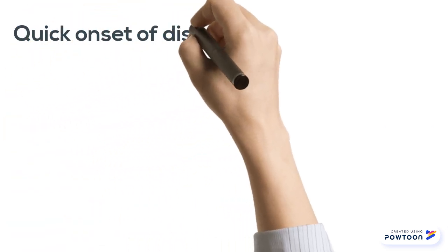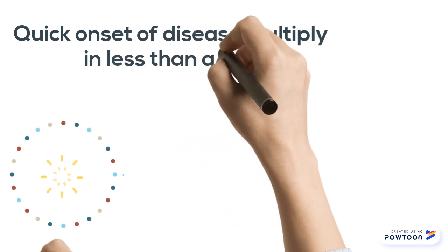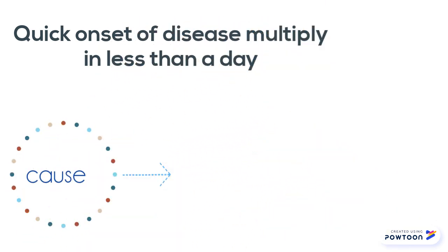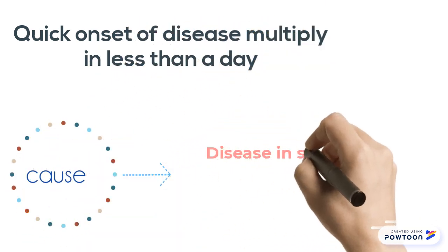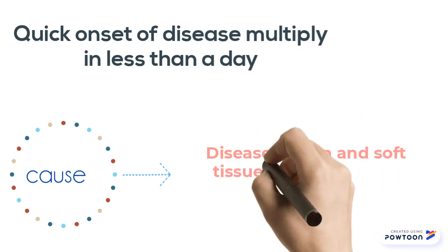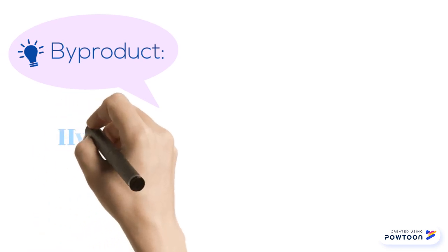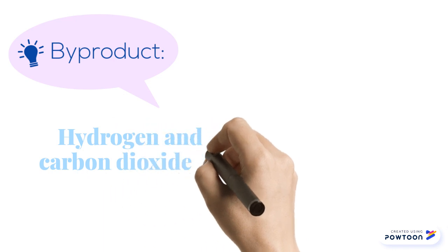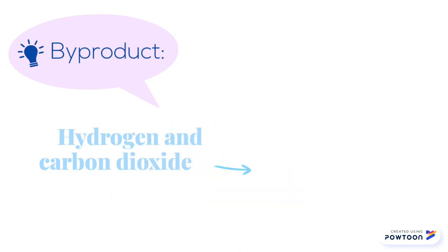It is known for its quick onset of disease as it can multiply in less than a day and causes disease in skin and soft tissue or the GI tract. This bacteria produces hydrogen and carbon dioxide as a byproduct of its replication, which results in the characteristic gas formation in tissues.